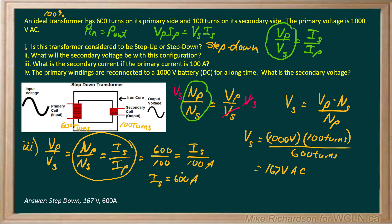Now the primary windings are now reconnected to a 1000 volt battery that's DC direct current for a long time. And what is the secondary voltage? Kind of a trick question. DC instead of connecting it to an alternating current like you see here, it's like hooking it up to a battery.